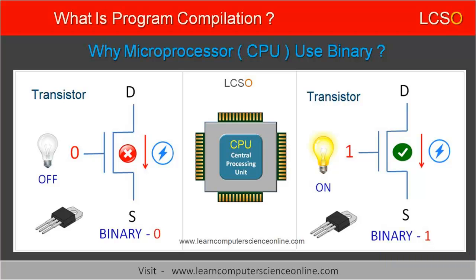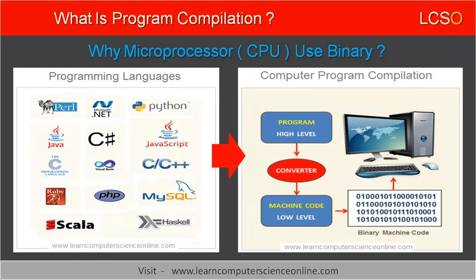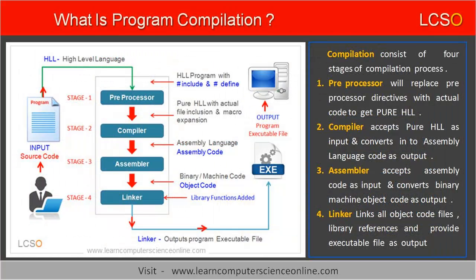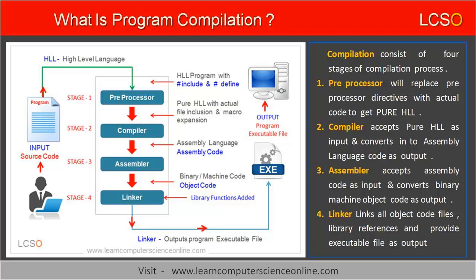The CPU understands only machine code in binary — in simple words, the processor understands the language of only zeros and ones. Therefore, all programs written in any programming language other than machine language must first be converted to machine instructions. The program compilation is a multi-stage process. The compiler converts the human-readable high-level computer program into low-level machine-readable code in binary format.